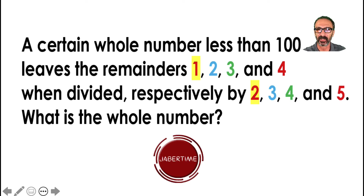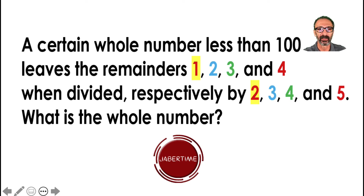Hi, welcome to my channel Jabbertang. Today I'm going to go over this interesting problem: a certain whole number less than 100 leaves the remainders 1, 2, 3, and 4 when divided respectively by 2, 3, 4, and 5. What is the whole number? I want to make it detailed — as you can see, I took the time to type and color the numbers, so I'm going to go one by one in fully detailed work.